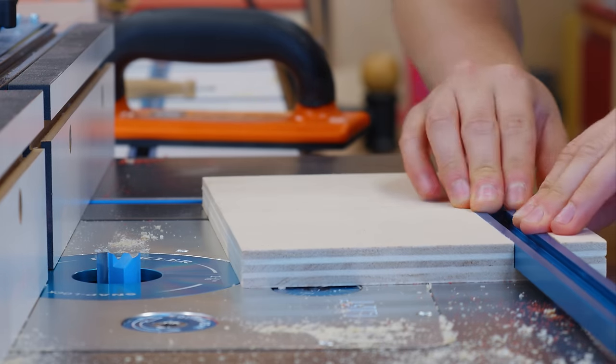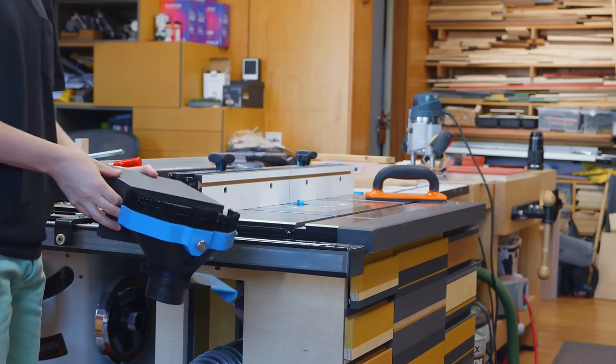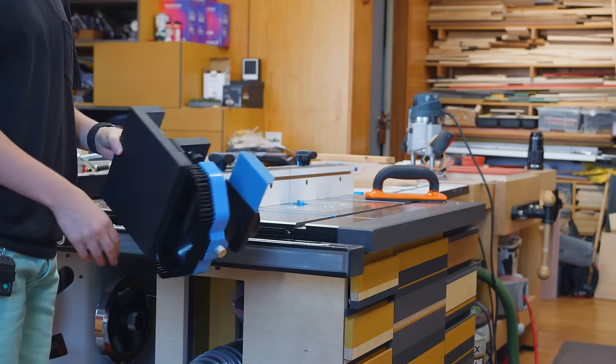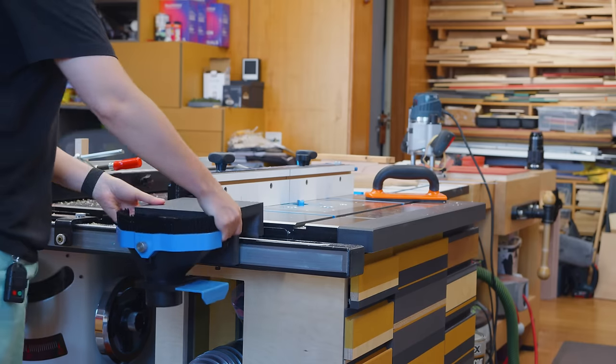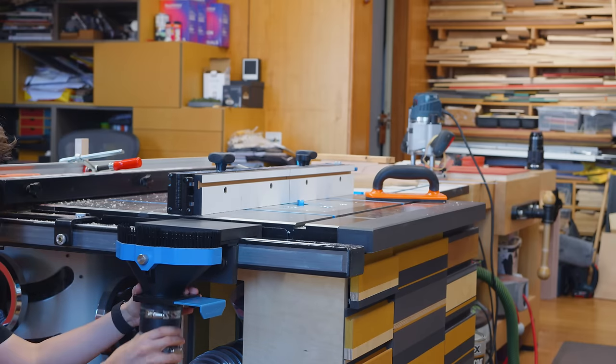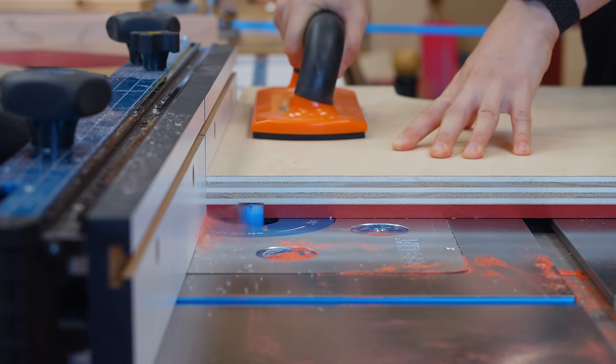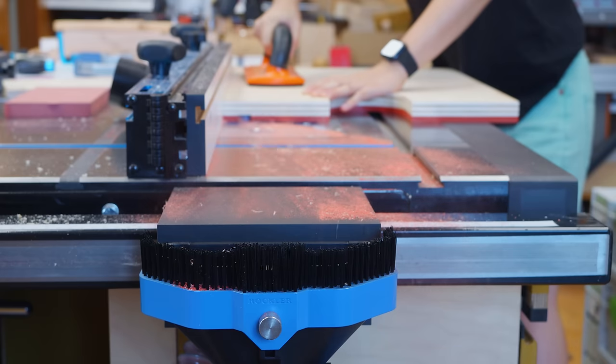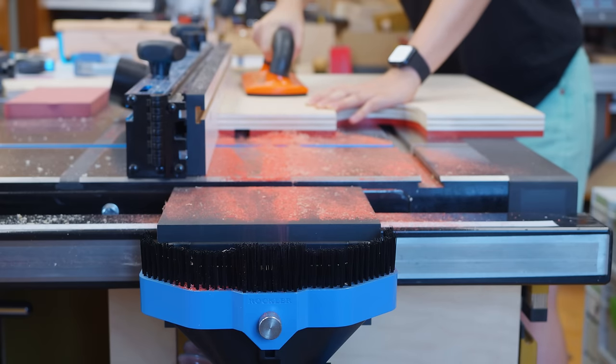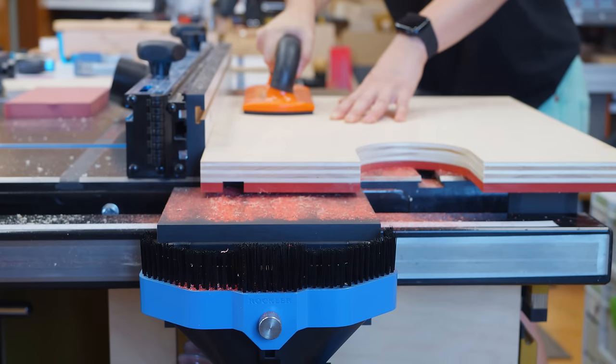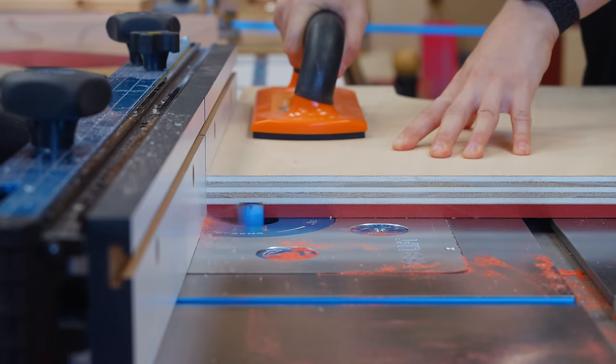Since I'll be routing dados most of the dust will be projected to the front of the router table. So, I'll attach this Rockler dado dust chute. It will collect the dust that would land on the floor and create a huge mess. And it did suck, most of it. At least I couldn't find any red dust on the floor after these cuts.